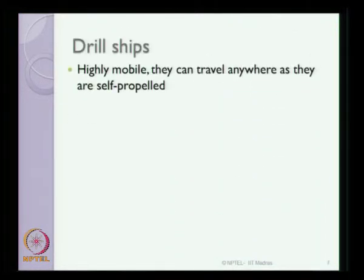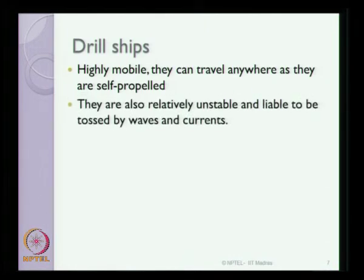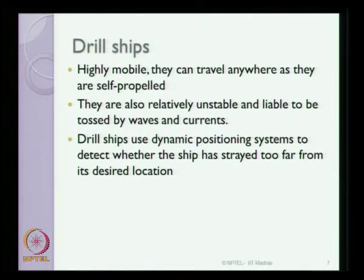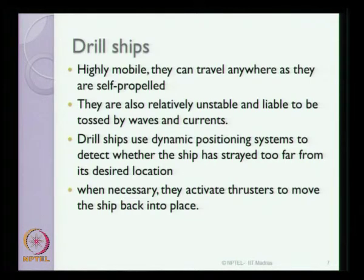Drill ships are highly mobile and versatile equipment that can travel anywhere as sea-going vessels with self-propulsion capacity. However, one disadvantage is that they are relatively unstable due to a high degree of flexibility, or compliancy, meaning they can be easily tossed by waves and current. Therefore, drill ships use dynamic positioning systems to detect whether the ship is exactly above the drilling location or has drifted too far, and when necessary, the DPS activates additional thrusters to move the ship back to position.